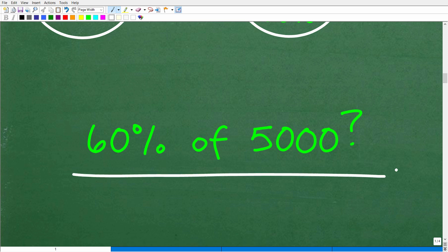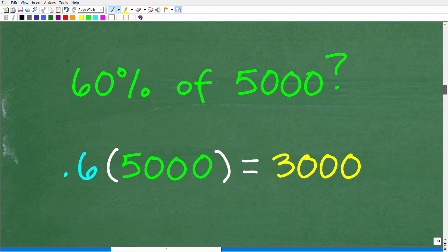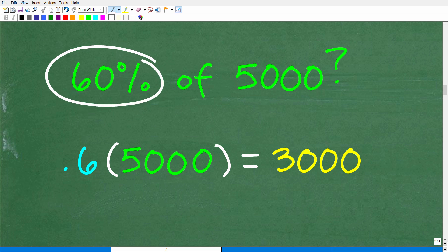So once again, feel free to use a calculator. But here we are talking about finding the percent of a number. All right, so how do we do that? Well, when you find a percent of a number, what we need to do is change the percent to a decimal or fraction. And the way we do that is by dividing by 100 or moving the decimal point over two places to the left.